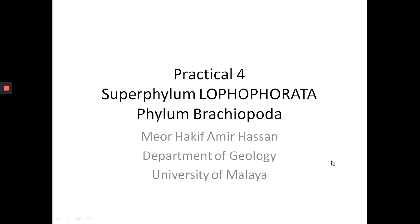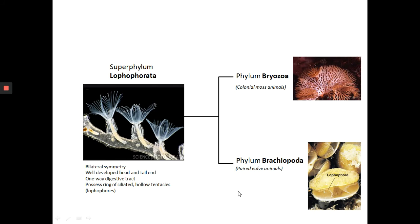Assalamualaikum, salam pagi, good morning. Continuing with the course, this is Practical number four. We are still looking at the super phylum Lophophorata, but we're looking at the second phylum: brachiopods. As we've learned in the previous lecture, Lophophorata organisms are characterized by bilateral symmetry, a well-developed head and tail region, a one-way digestive tract with mouth and anus, and all of them share the characteristic of possessing a ring of ciliated hollow tentacles used for filter feeding and respiration — the lophophore.